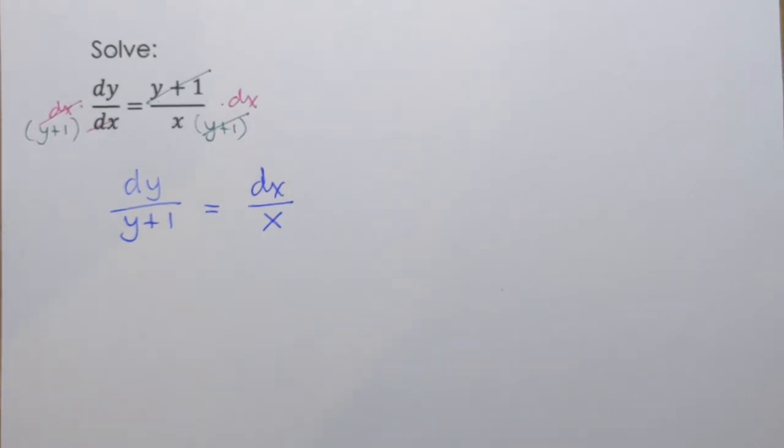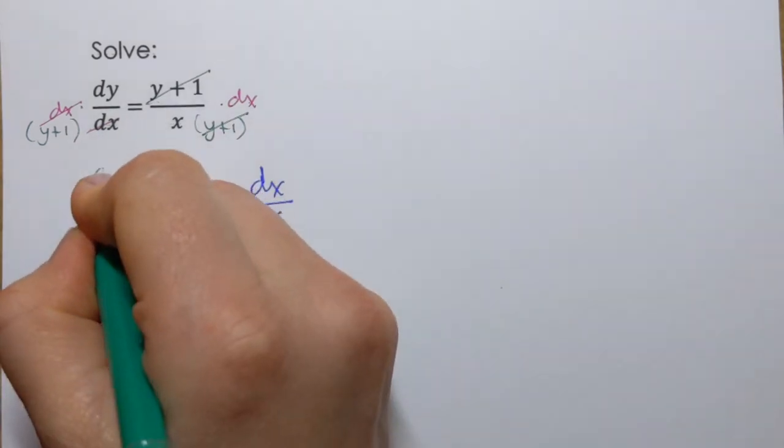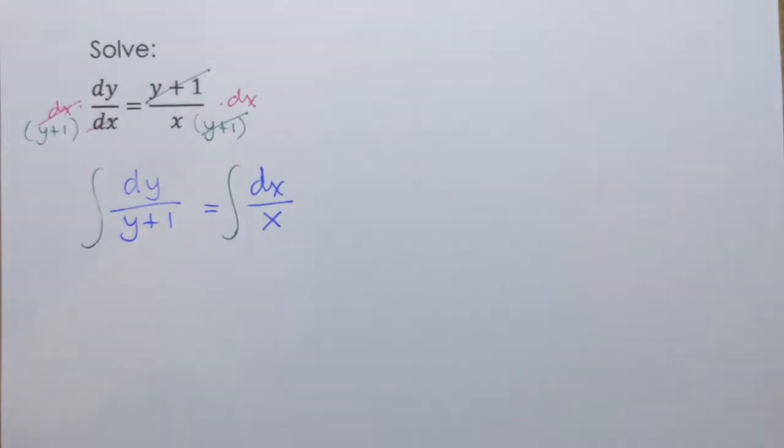Okay and after that once we separated variables and we can see that we did right, all y's are on the left, all x's on the right, we're ready to integrate both sides. So I'm going to apply integral to each side.